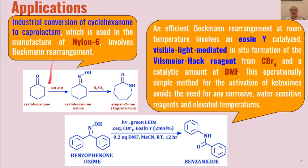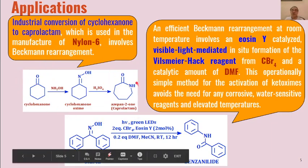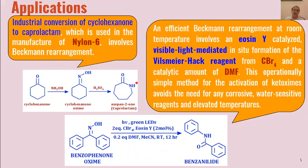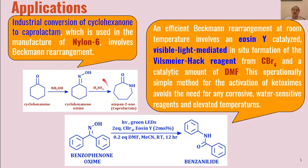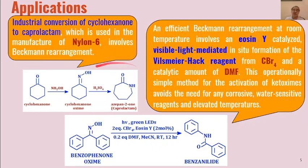An important application of Beckman rearrangement is the industrial conversion of cyclohexanone into caprolactam, which we have studied even at the undergraduate level. This process involves three steps: cyclohexanone reacts with hydroxylamine to give cyclohexanone oxime, which then undergoes Beckman rearrangement in the presence of sulfuric acid to give caprolactam. This caprolactam is used as a monomer in the manufacture of Nylon 6, so industrial synthesis of Nylon 6 is very much dependent on the Beckman rearrangement.